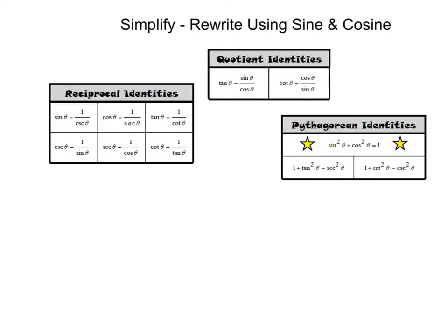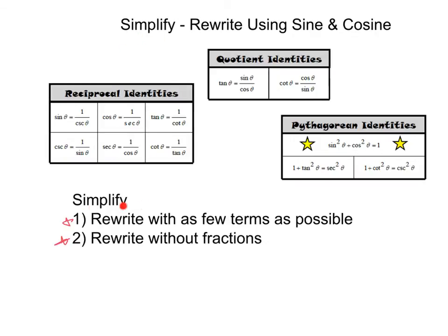Our goal of this lesson is going to be to simplify trigonometric expressions. Let's remind ourselves what it means to simplify something. First, you want to rewrite with as few terms as possible. Next, we want to rewrite without the use of fractions.